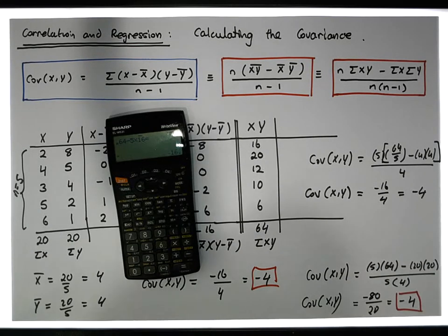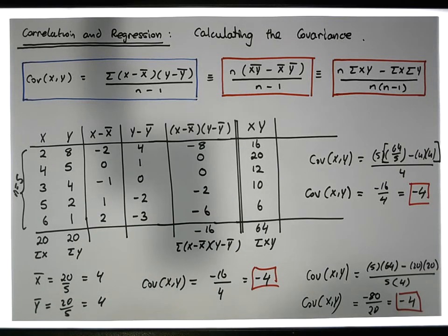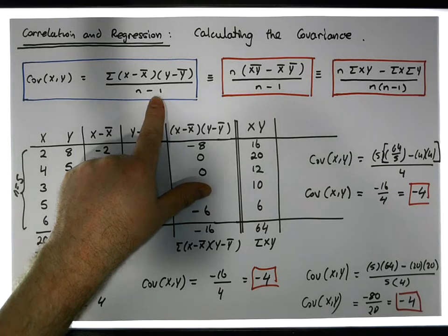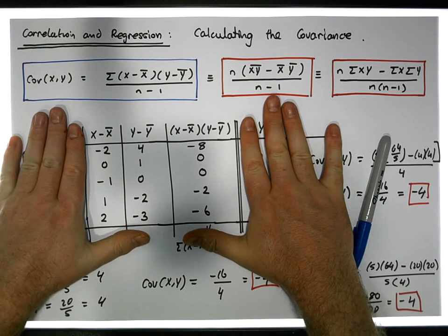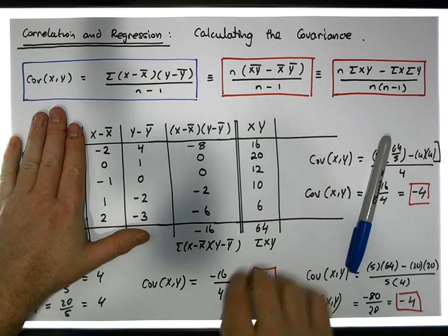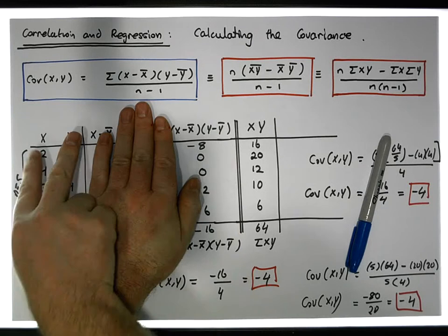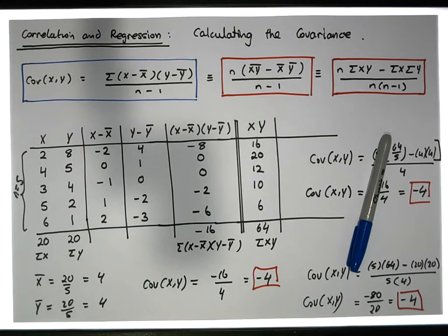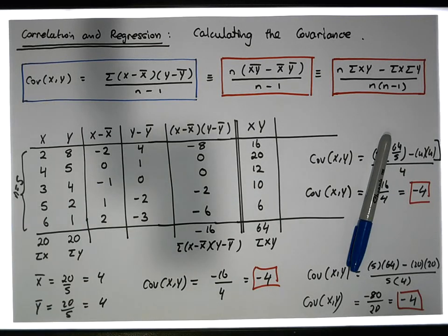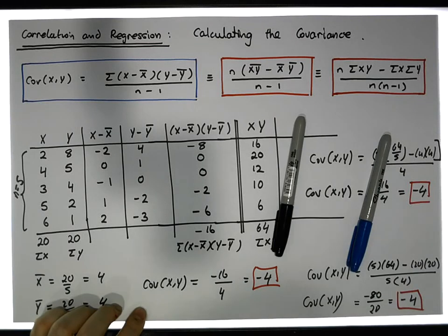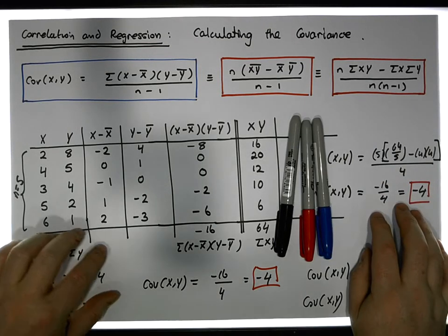That third formula agrees with what we calculated earlier. To be honest, when doing this by hand we would never really use that version — we'd use the simpler formula, eliminating the middle columns and only needing the x, y, and x*y columns. Remember, the covariance only tells us the directionality of the association between x and y. To get a normalized magnitude, we calculate the correlation coefficient. Once again, this is Jonathan Lambert with the Mathematics Development and Support Service at the National College of Ireland — I hope these videos were intuitive and helpful. Thanks for watching.